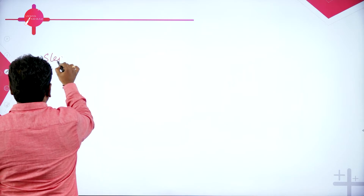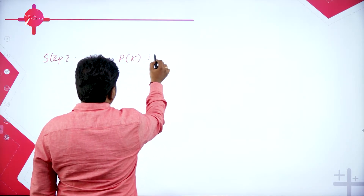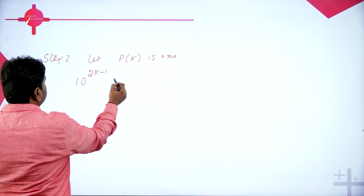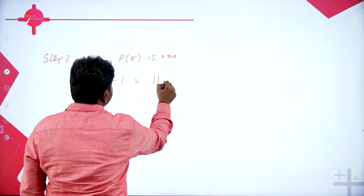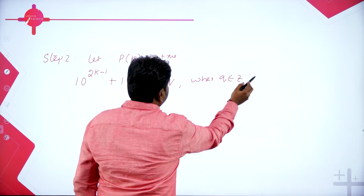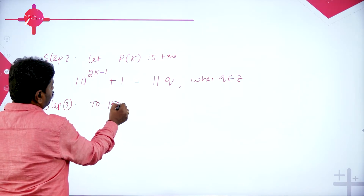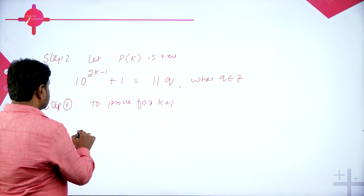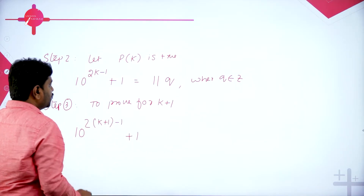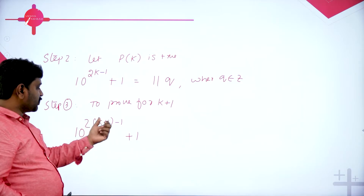Step 2: Let P(k) be true. That means 10^(2k-1) + 1 is a multiple of 11, equal to 11q where q is an integer. That is our equation 1. Step 3: to prove for k+1. Change k to k+1 in the expression: 10^(2(k+1)-1) + 1. Remaining part is the same — only replace k by k+1. So I should prove 10^(2k+1) + 1 is a multiple of 11.